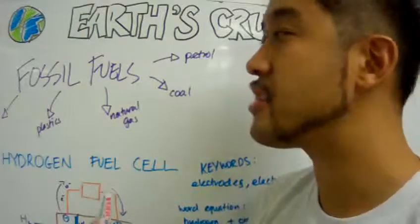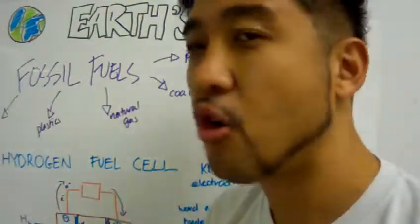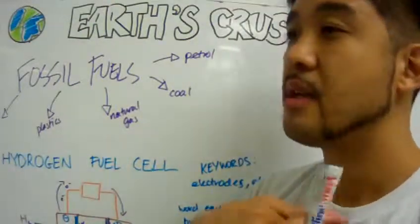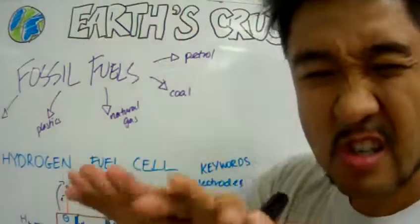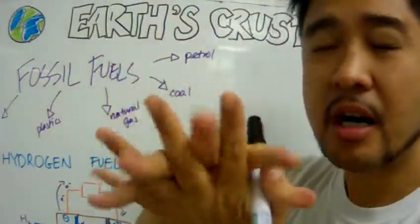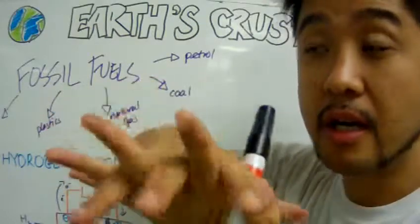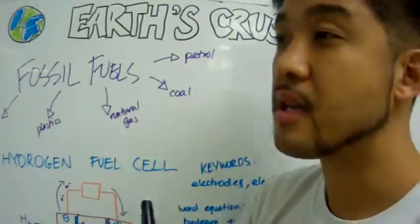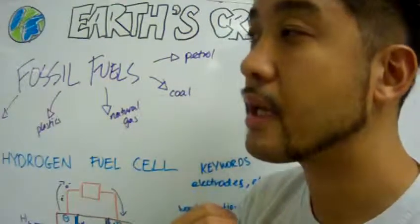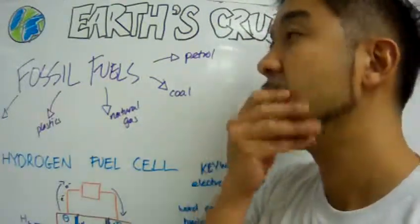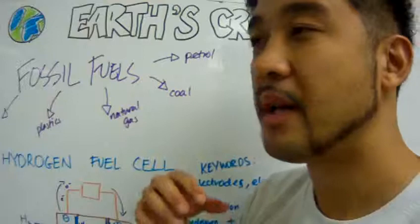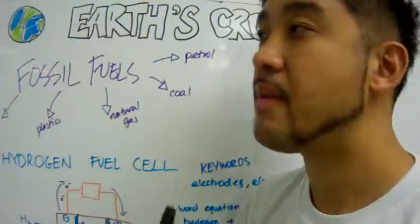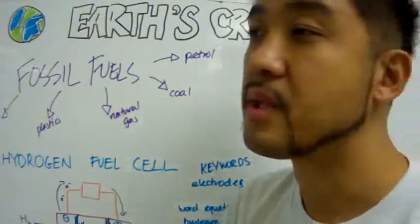Fossil fuels are basically made of any organic matter that has decomposed, decayed, and has been undergoing an intensive pressurized process to make into these organic substances. When people extract fossil fuels, there are basically three types of fossil fuels that they can extract.